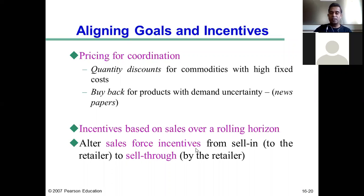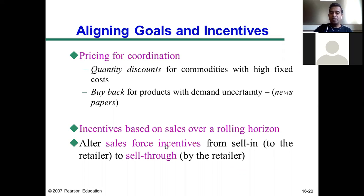The key point here is to alter sales force incentives from selling to the retailer, to sell-through by the retailer. We are talking about a manufacturer like Procter & Gamble selling directly to organized retail chains like Walmart. The sales reps involved in this business sell directly to Walmart. 'Selling' is what Procter & Gamble sells to the retailer Walmart, while 'sell-through' is the actual sales made by Walmart of Procter & Gamble products.